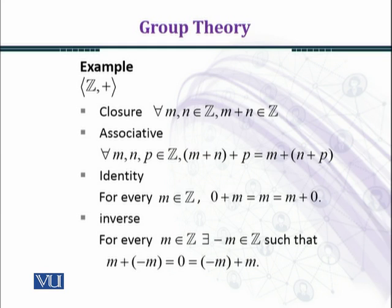For every M belonging to Z, there exists minus M in Z such that M plus (minus M) equals 0, which equals (minus M) plus M. It means that minus M is the additive inverse of M. For instance, if you have the integer 5, its additive inverse is minus 5, and when you add 5 and minus 5, the answer is 0, which is the additive identity in the set of integers.